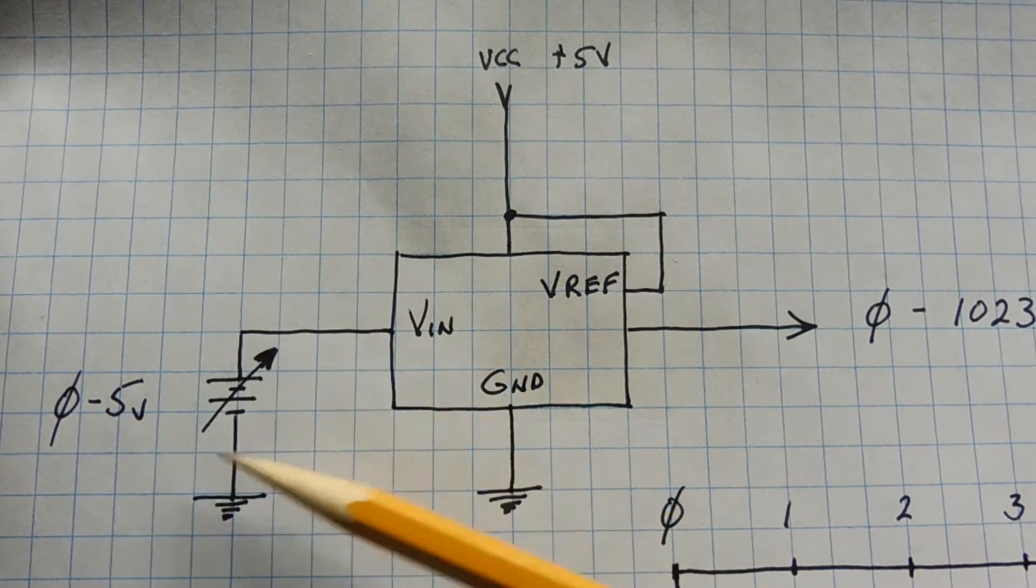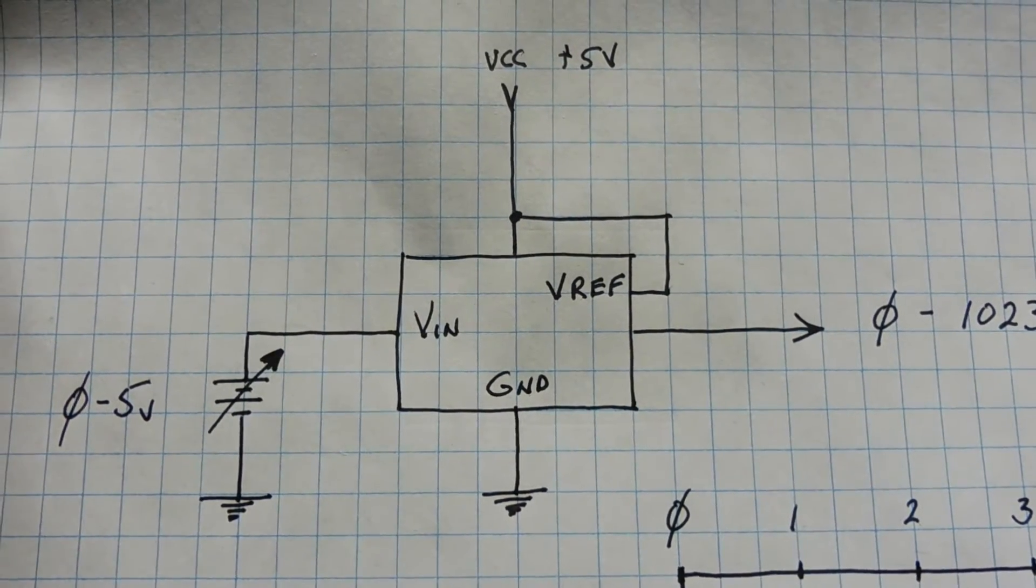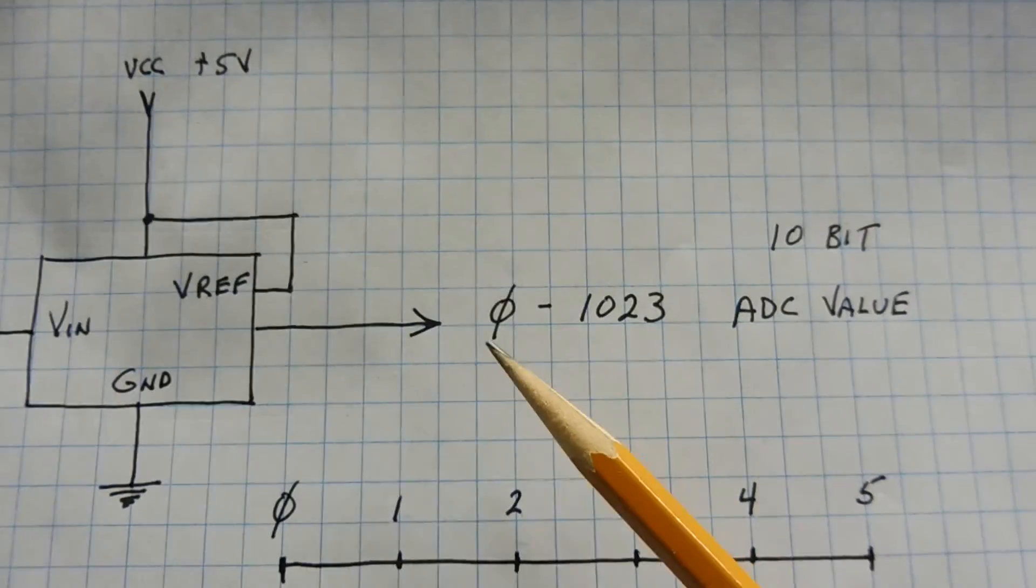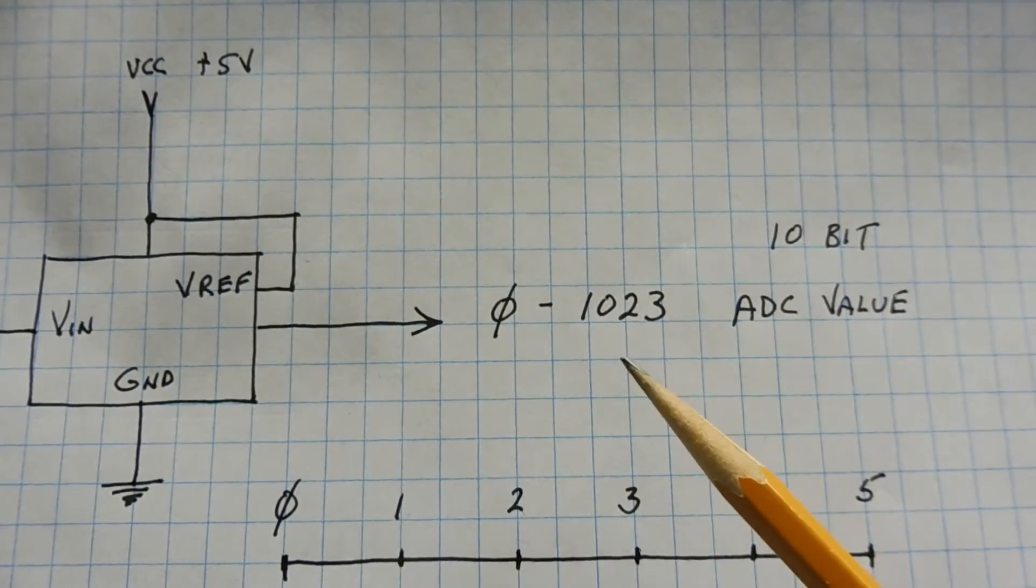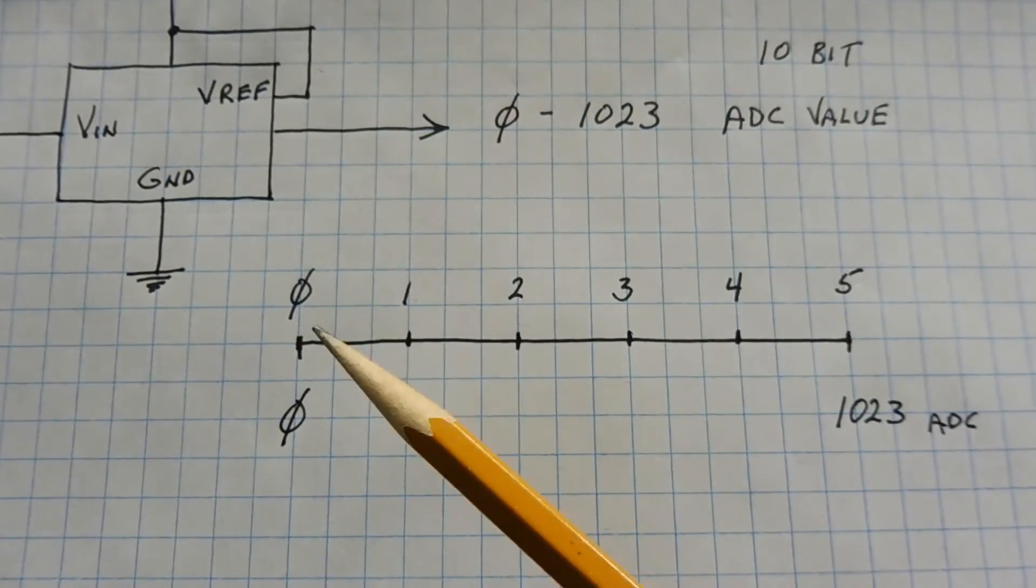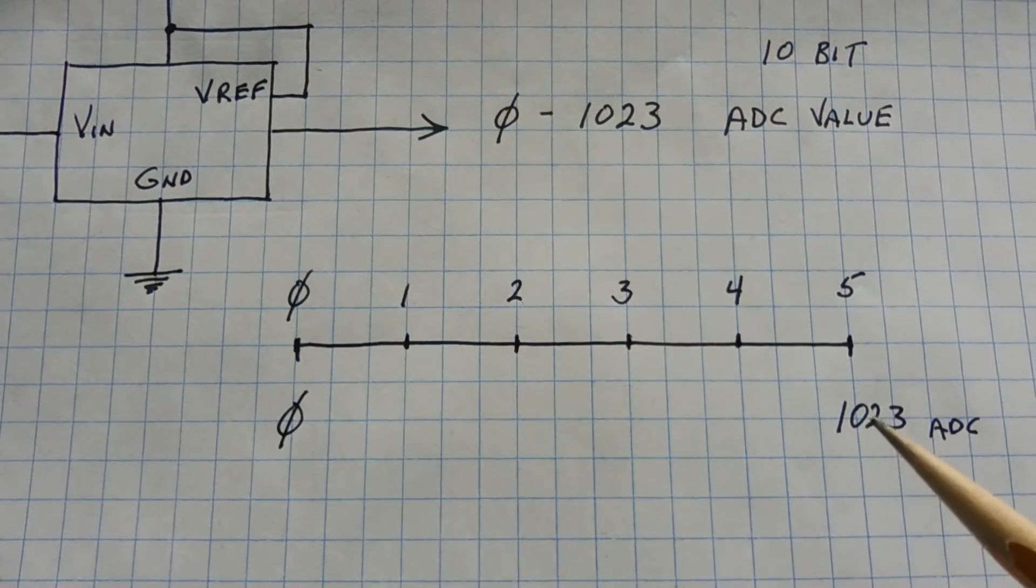So, the 0 to 5 volts, this could be our sensor, which is feeding our ADC. Now, as we vary the sensor from 0 to 5 volts into the VIN, we'll get output ADC values of 0 to 1023. So, you can see a little chart here. You can see the input from 0 to 5 volts will give an output ADC value of 0 to 1023.